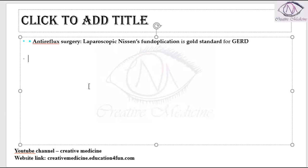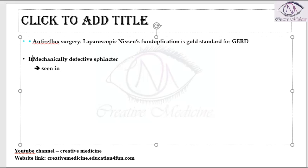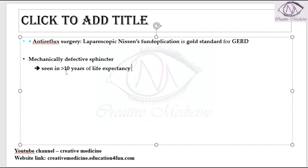Some patients might have a mechanically defective sphincter. A mechanically defective sphincter is seen in people who have more than 10 years life expectancy. Because of this defective sphincter, they might need lifelong therapy. In both these conditions — mechanically defective sphincter or life expectancy of more than 10 years requiring lifelong therapy — surgical therapy is the treatment of choice.